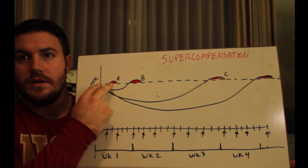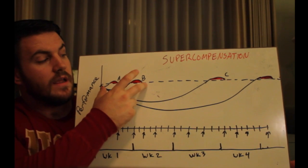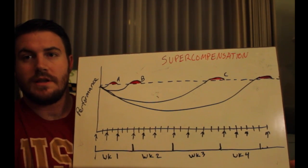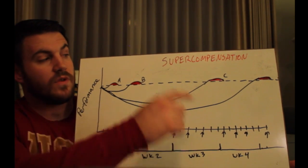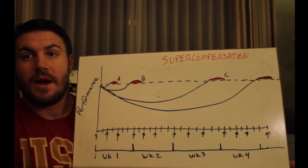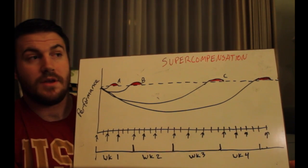For the novice, the microcycle is 24 to 72 hours. For an intermediate, the microcycle is maybe 7 to 10 days. And for the advanced athlete, the microcycle could be anywhere from 1 month to 3 months, and maybe even beyond that.